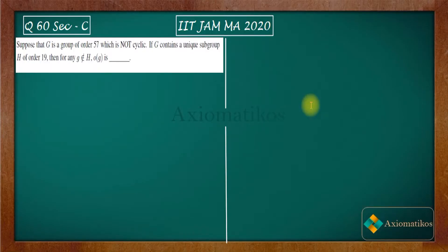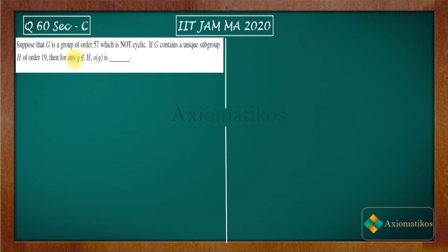Hello dear students, welcome to the Axiomatic course. This video is part of the solution series for IIT JAM 2020. We are here with problem 60, a numerical answer type problem. Suppose that G is a group of order 57 which is not cyclic. If G contains a unique subgroup H of order 19, then for any g belonging to H, what will be the order of g?